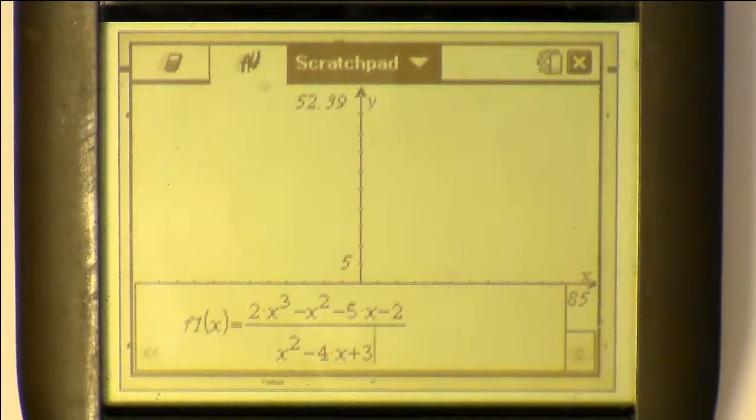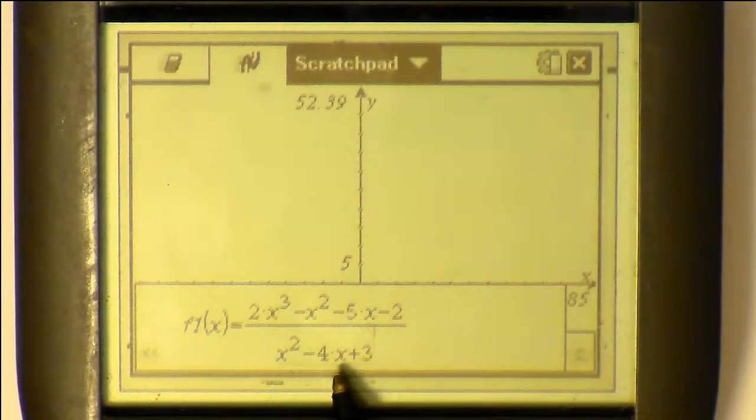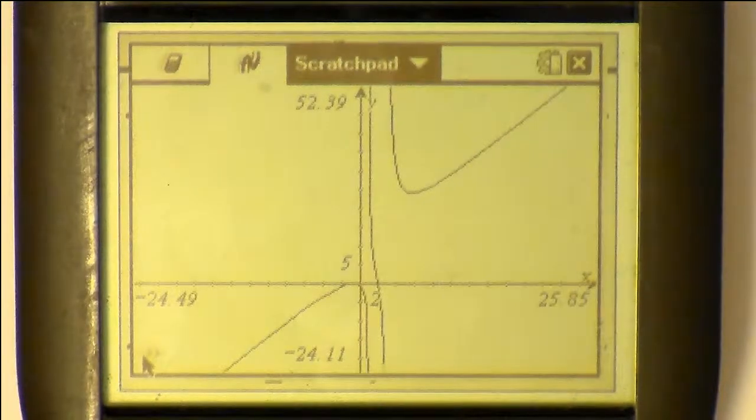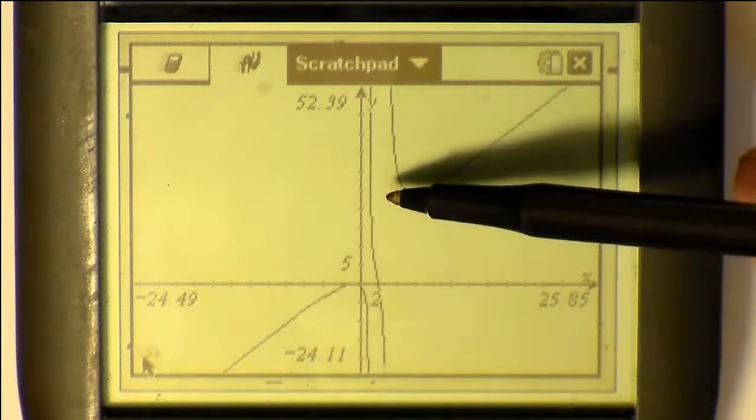As you can see here, the order on top is in fact one more than the order on the bottom. We have order 3 on top, order 2 on the bottom. Press enter. And we get a rather strange one. There's an oblique asymptote there. And this time there will be two vertical asymptotes.